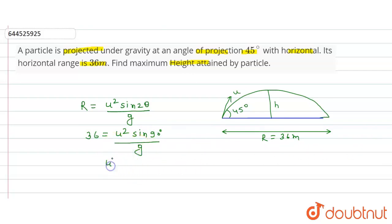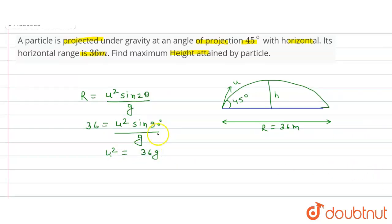So from here, u² is equal to 36 into g, since sin 90 is 1.